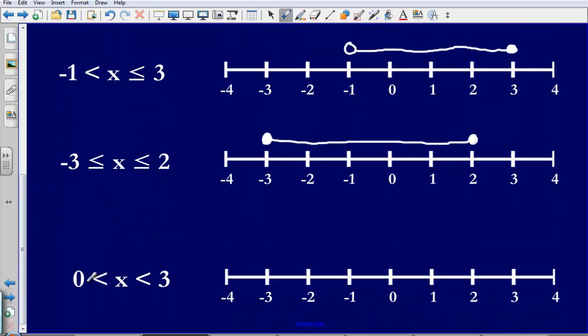And then lastly we have got x is greater than 0 but smaller than 3, so we are going to have hollow circles because it can't be equal, there is no equal part to our inequality and then we just connect them with a line.